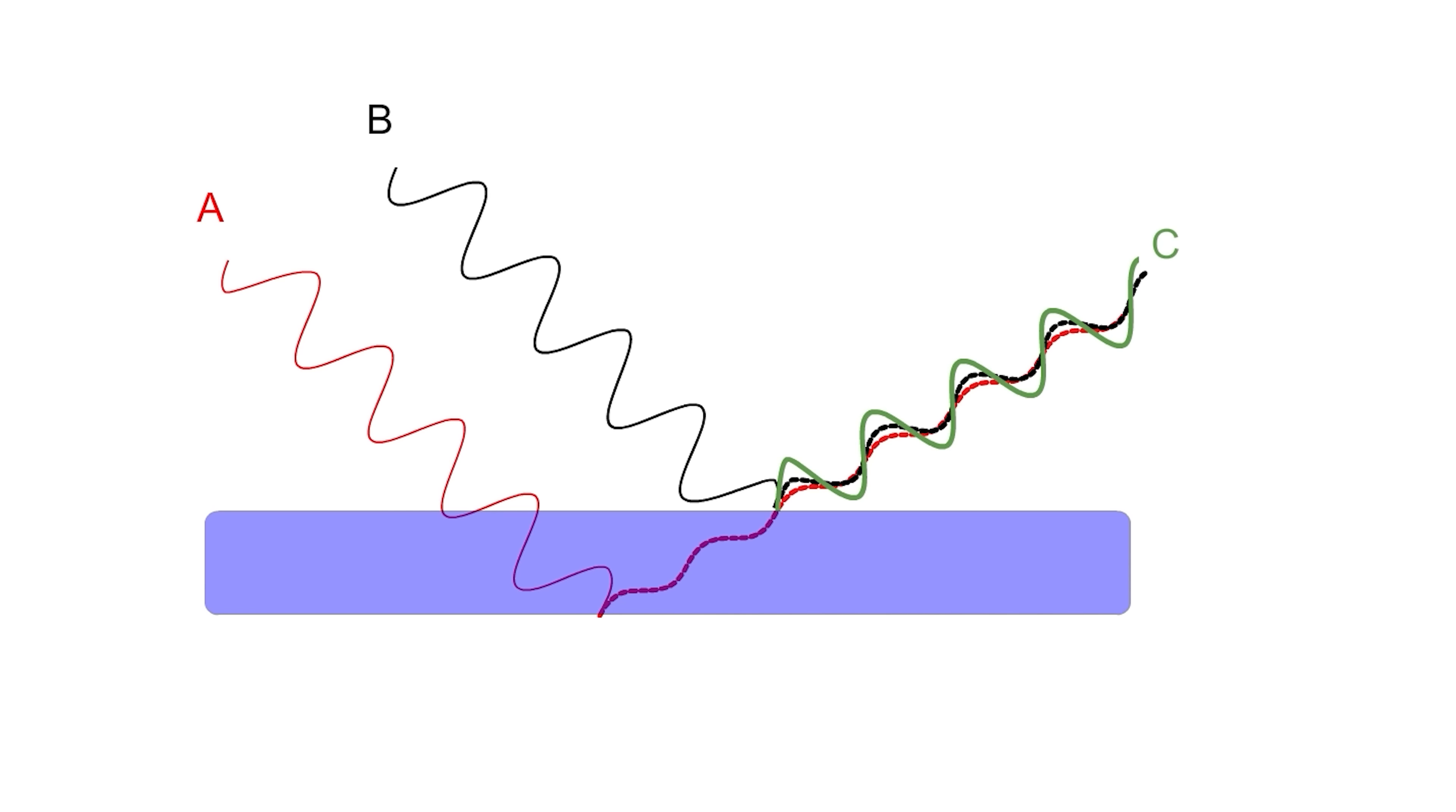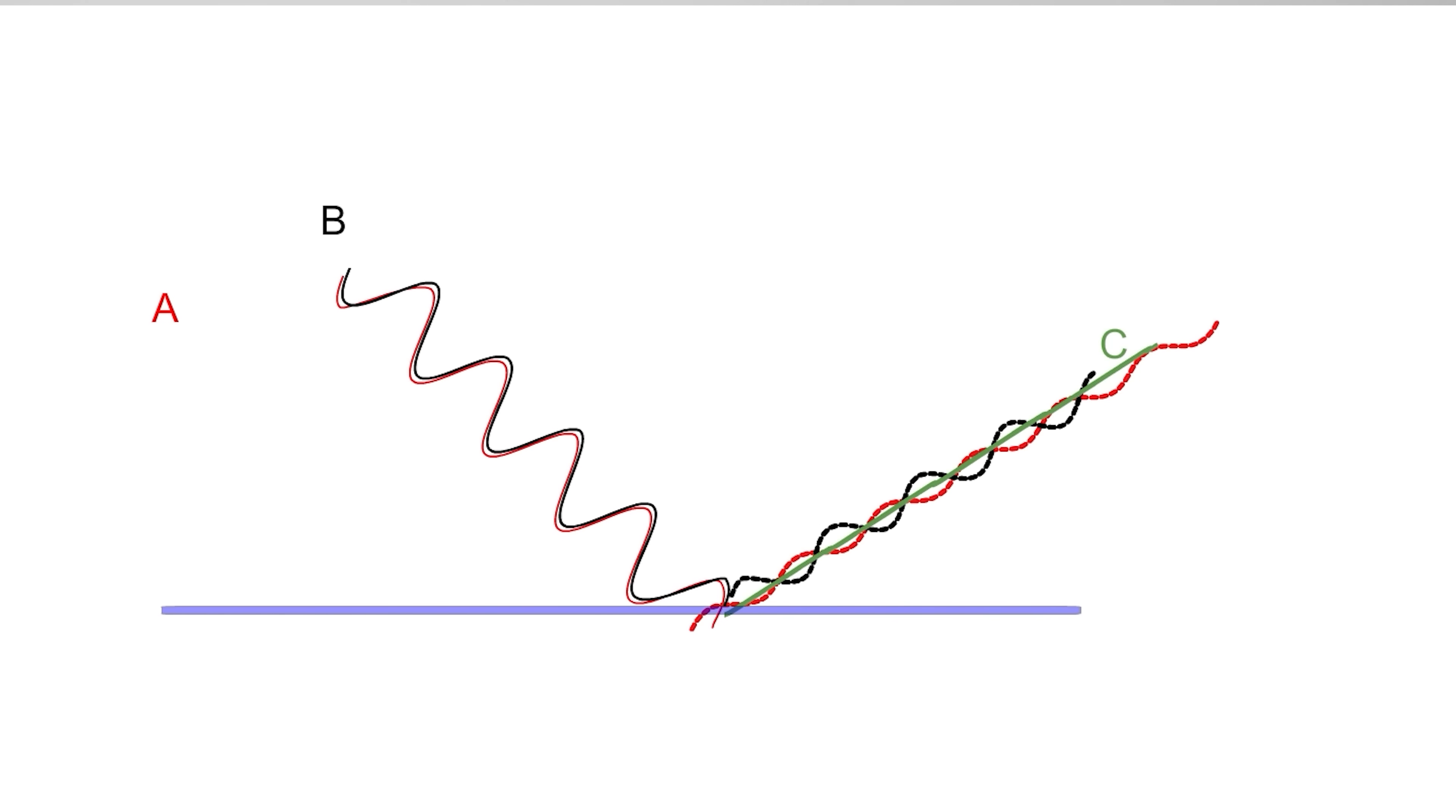When they don't line up, you get destructive interference, meaning it lessens the amount of light coming off of the surface. And when it does line up, you get constructive interference. So it looks a little bit brighter.